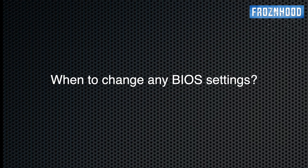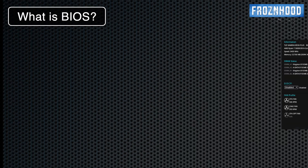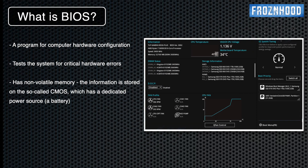What BIOS is, when should you enter and make changes to it, when should you update it and how. Simply explained, BIOS is a program located in a special memory chip on the motherboard that runs every time you start the PC and checks if the installed hardware and its settings are ready to boot the system properly.